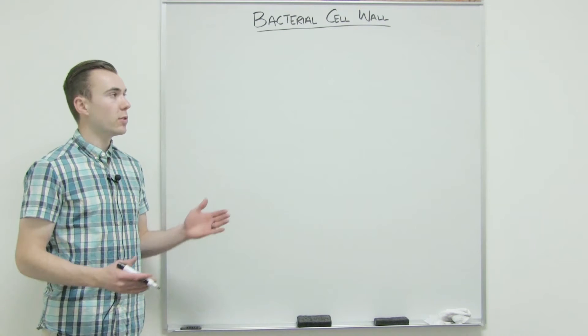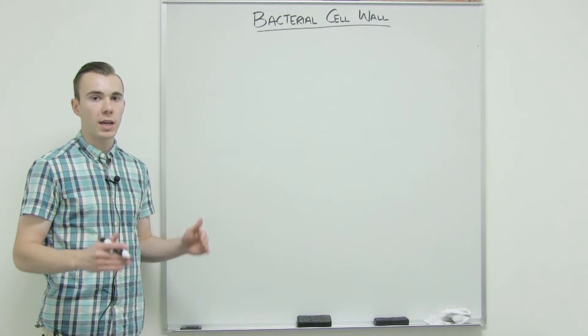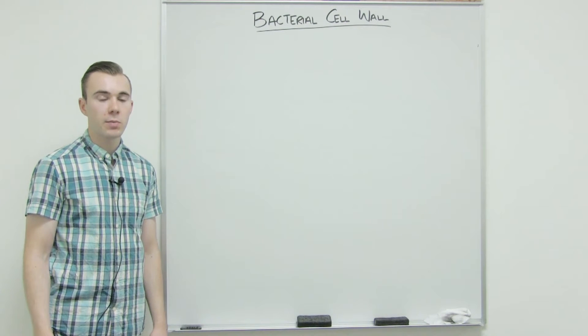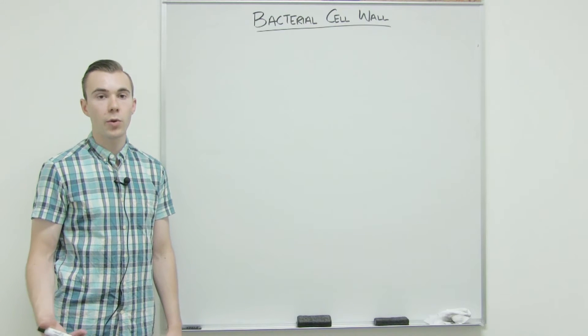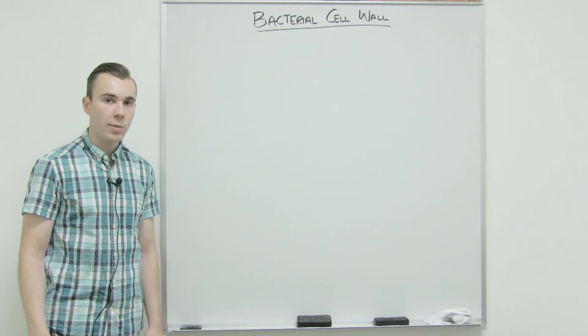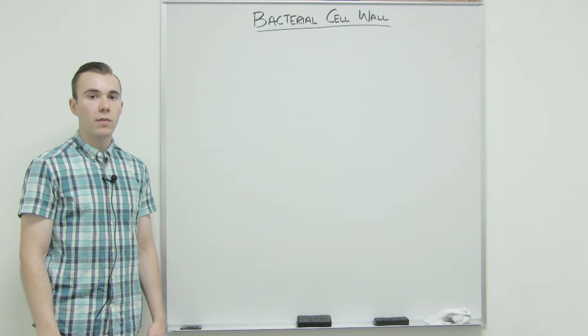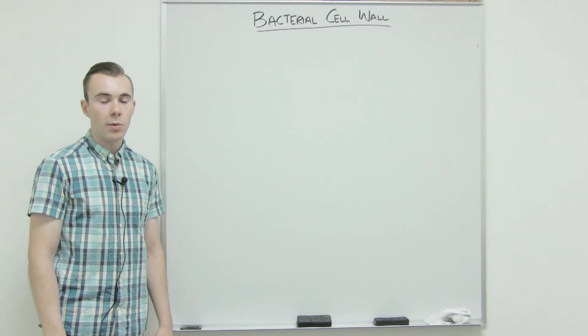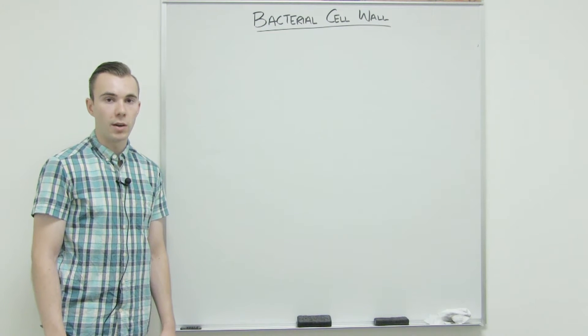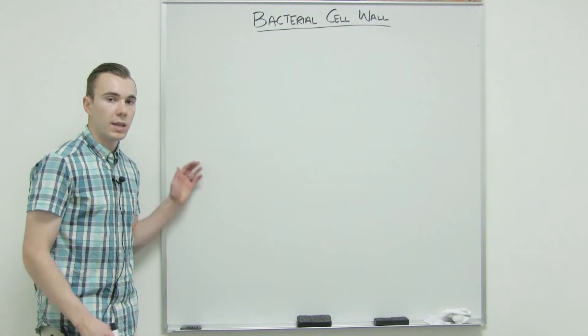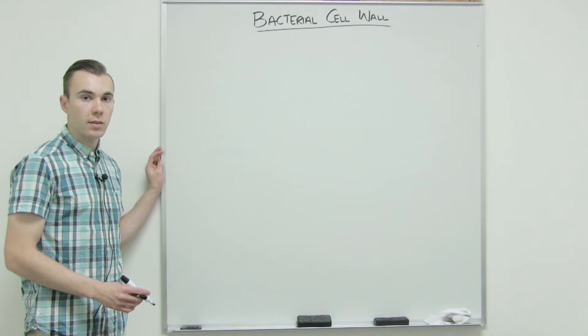The bacterial cell wall can be classified further into two types, and these types are based upon the results of what we call the gram stain. We'll talk about the gram stain in a further video, so if you have some more questions about that I would encourage you to look up the gram stain video. The two results that you can get with the gram stain are gram positive and gram negative.